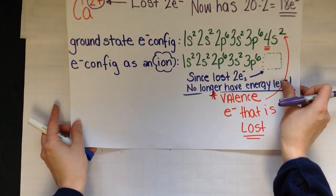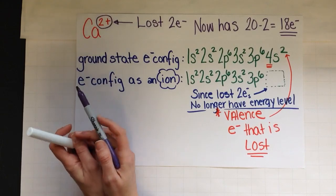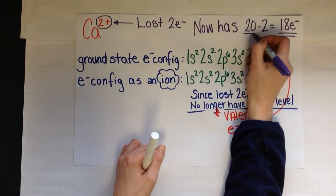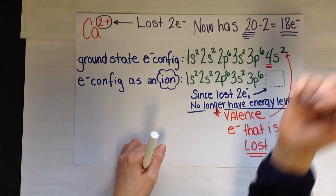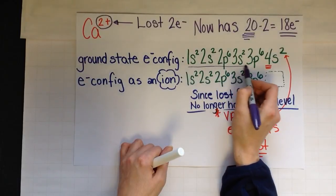How about a cation? Well, if you notice here, I have calcium, the cation, calcium 2 plus. And that means I lost two electrons. So I originally had 20 electrons minus two gives me 18 electrons.